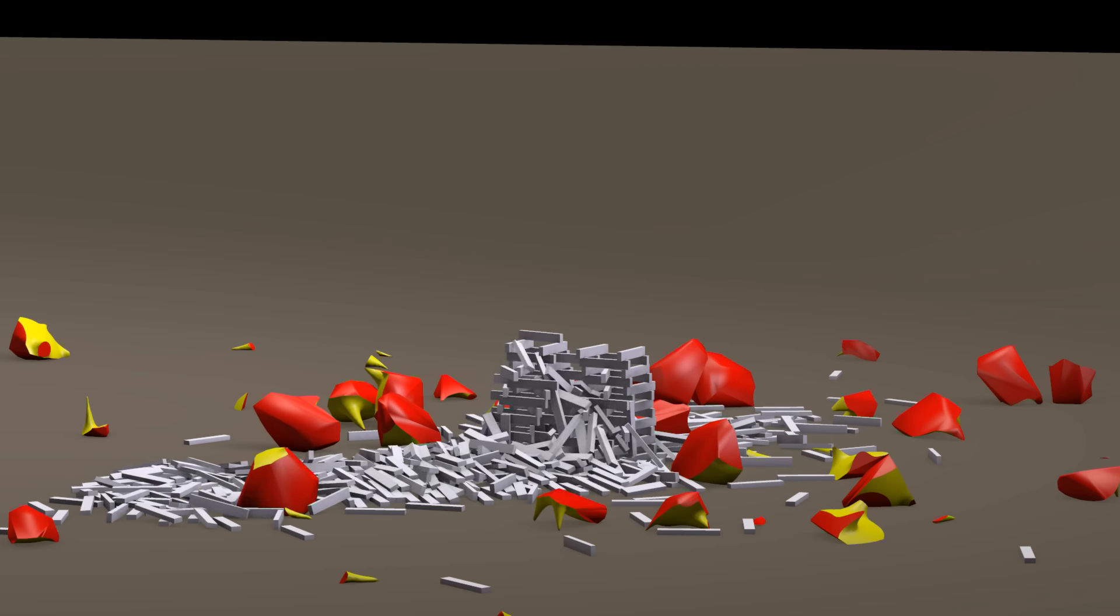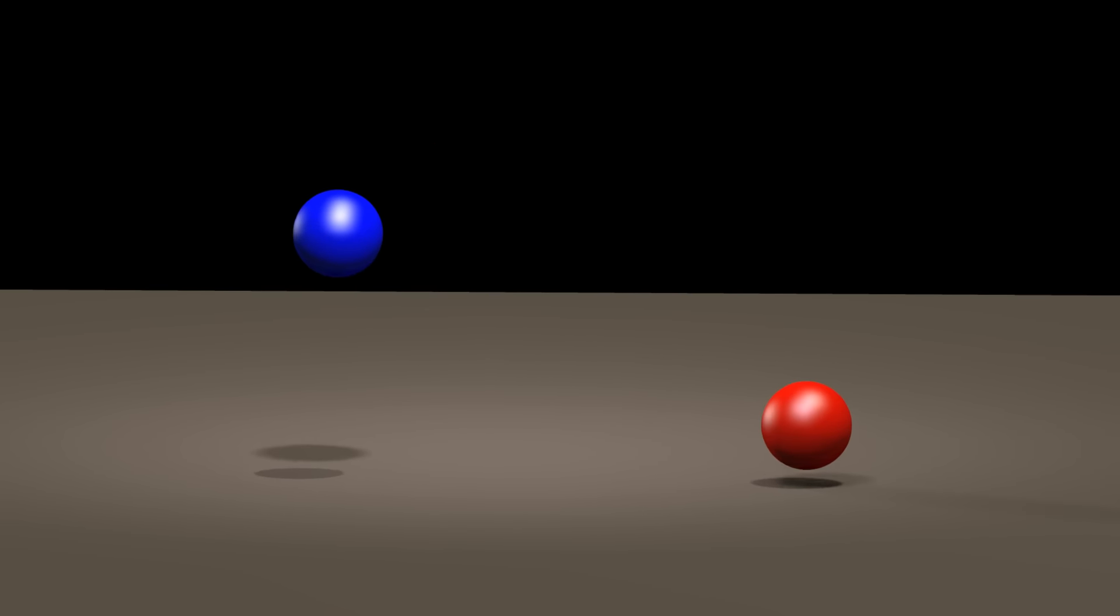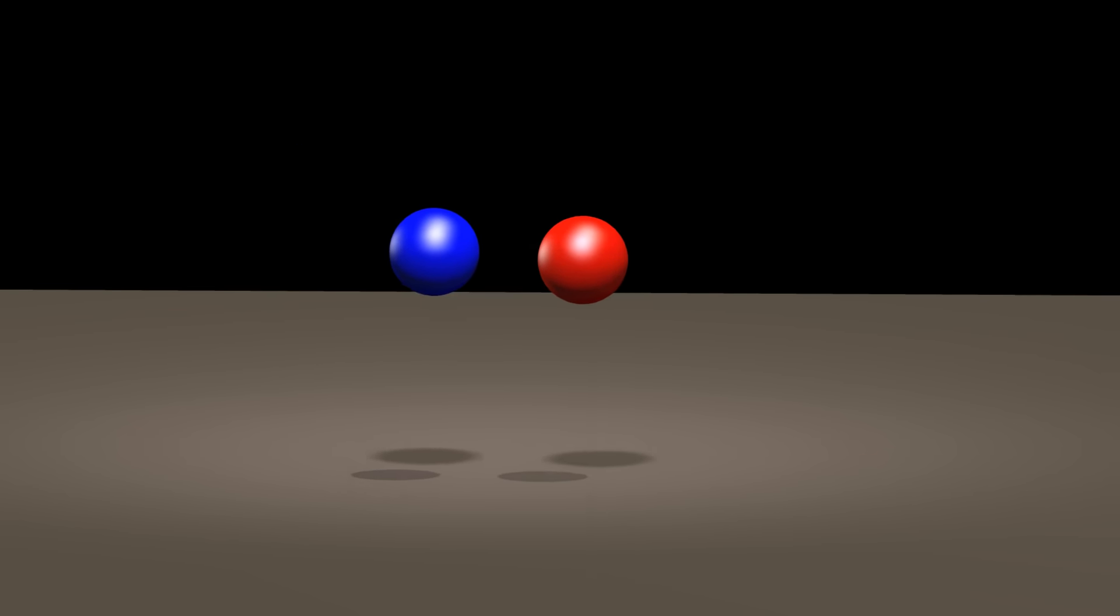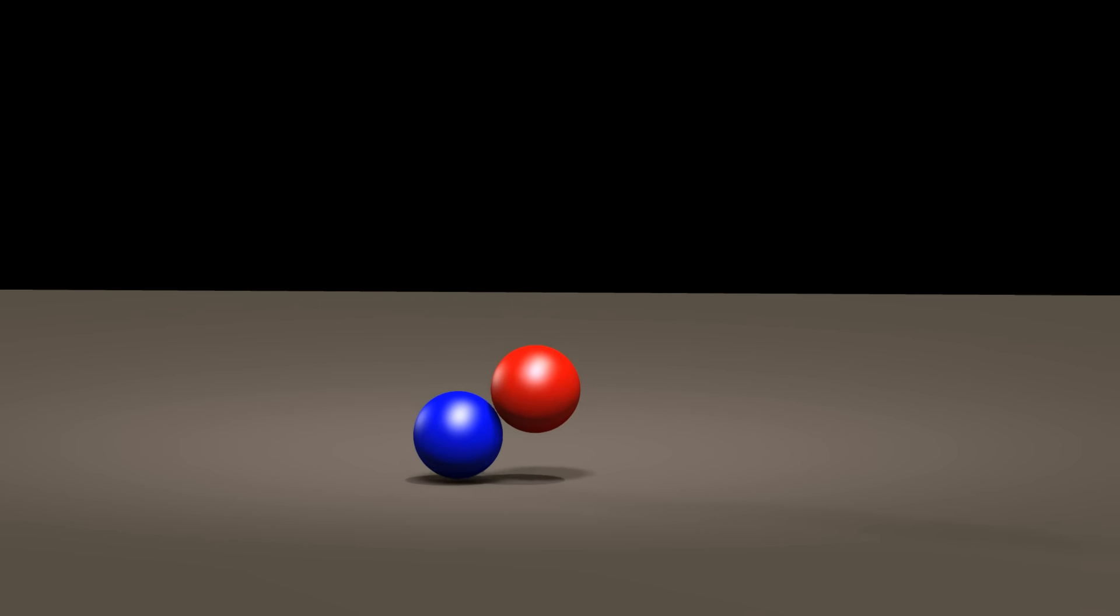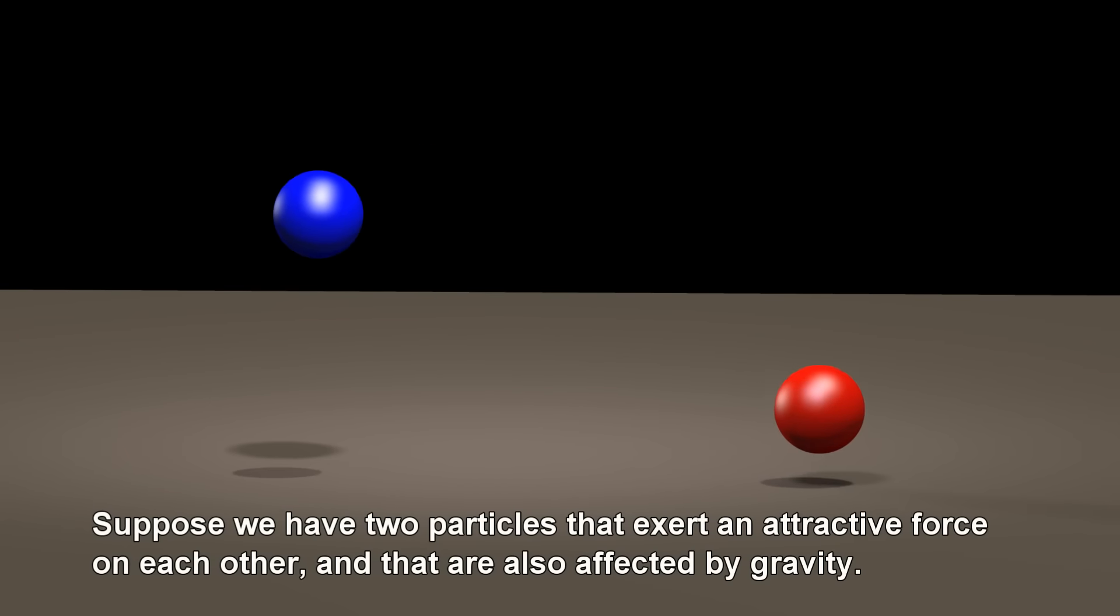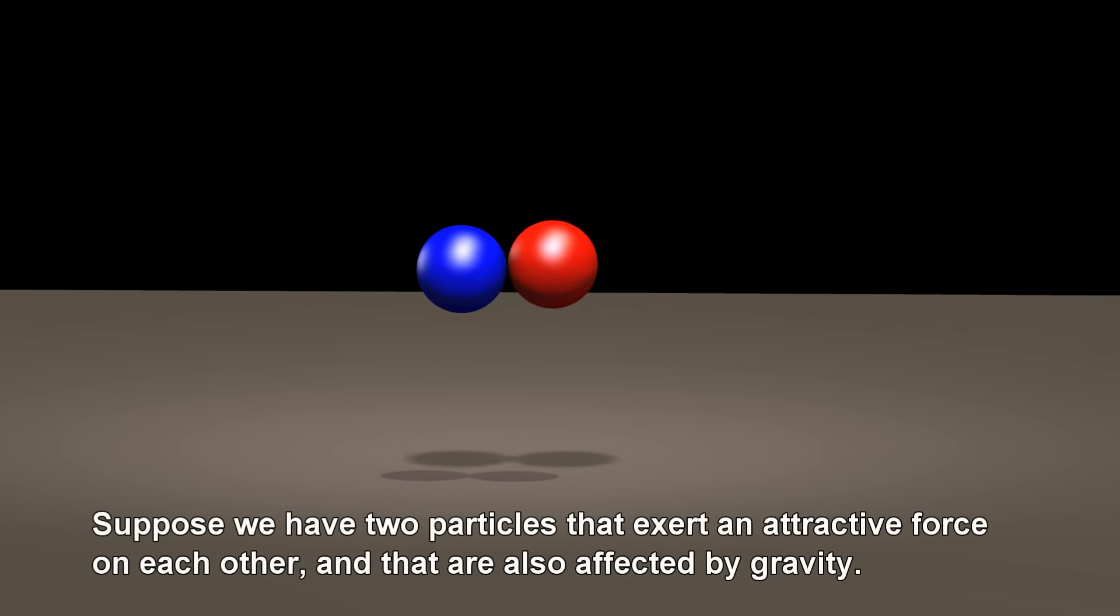To understand how a physics simulation can be performed for any situation, no matter how complex, let us first consider a very simple situation in Newtonian physics. Suppose we have two particles that exert an attractive force on each other, and that are also affected by gravity.